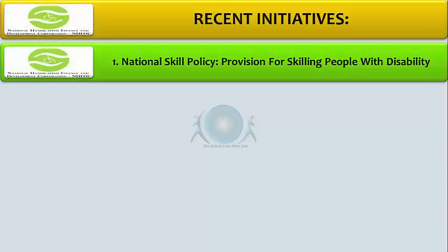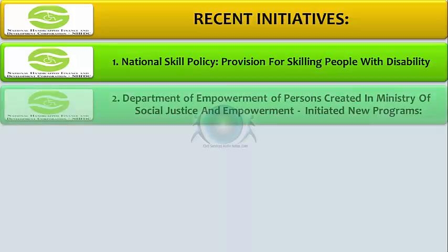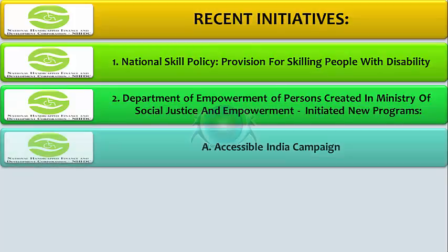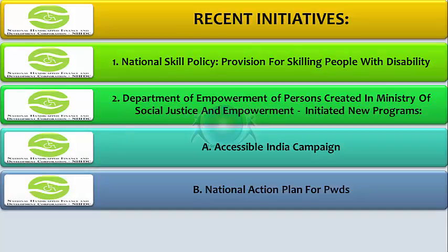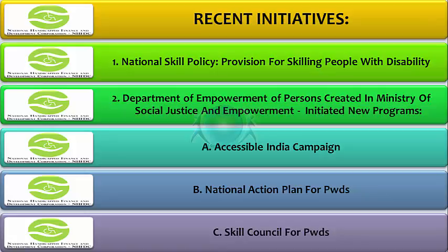The National Skill Policy has a provision for skilling people with disabilities with a special incentive. The Department of Empowerment of Persons with Disability has been created in the Ministry of Social Justice and Empowerment, and it has initiated new programs like the Accessible India Campaign, the National Action Plan for PWDs, and the Skill Council for PWDs.